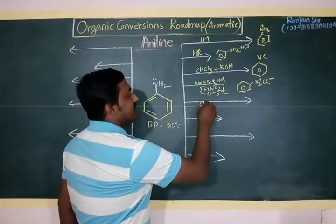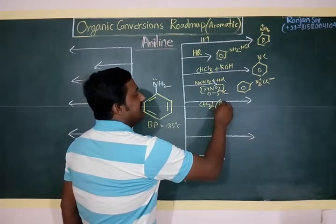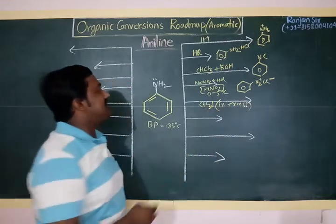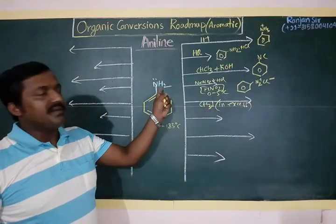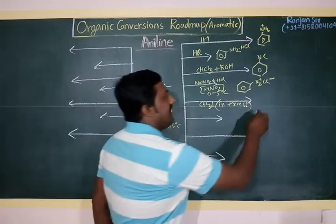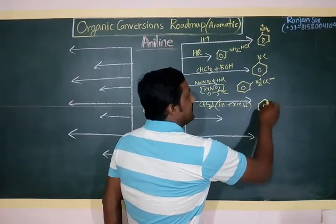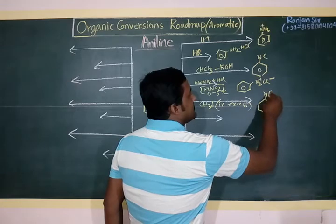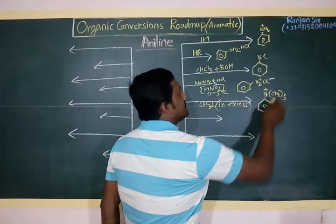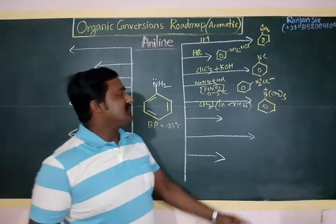Aniline can react with methyl iodide (CH3I) in excess. As methyl groups are introduced by releasing hydrogen, the compound formed is N(CH3)3H — the trimethylanilinium compound.